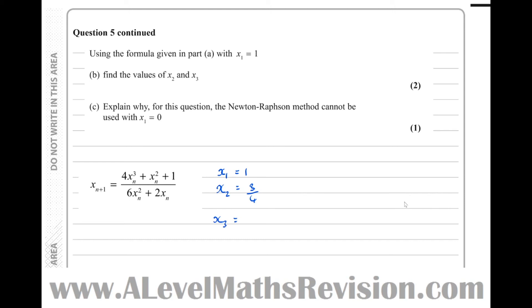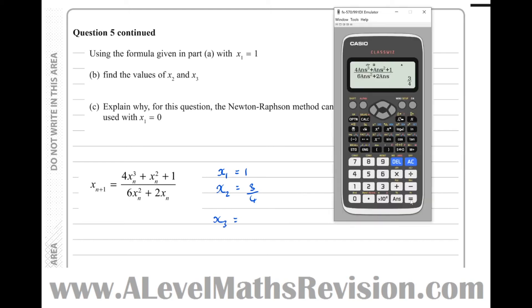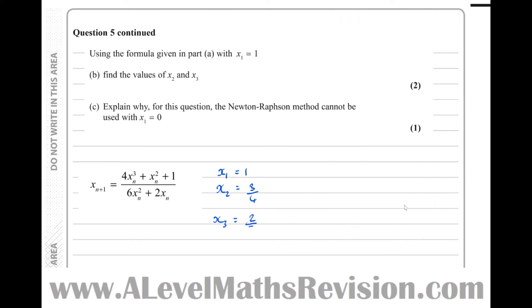Then x3, pressing equals again, we get 2 thirds. So that's that part done, that's part b.